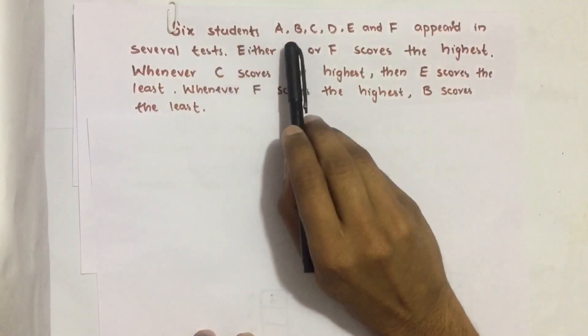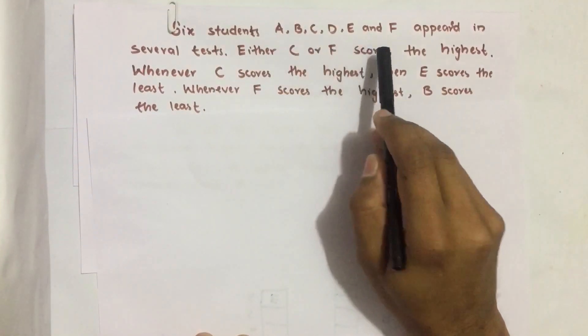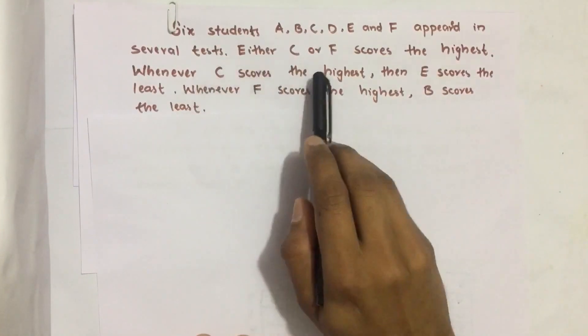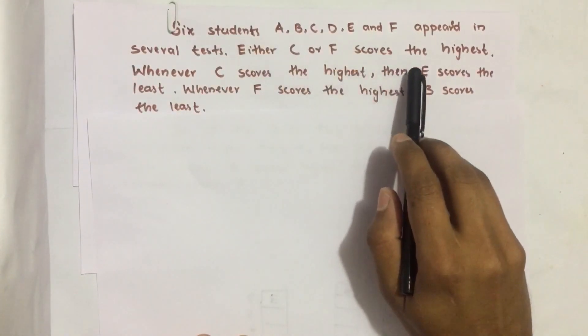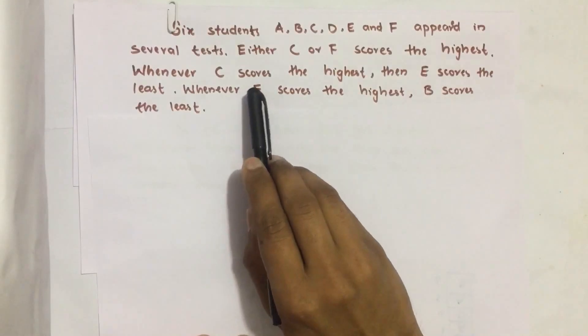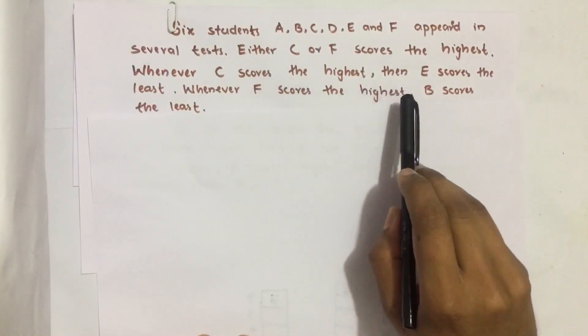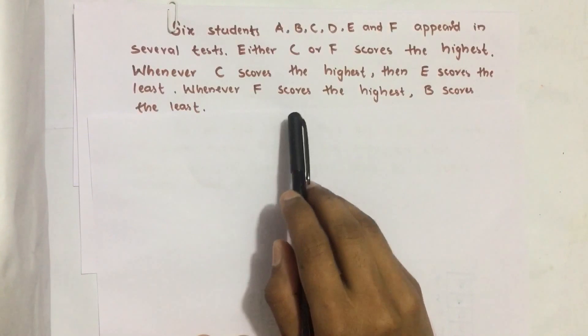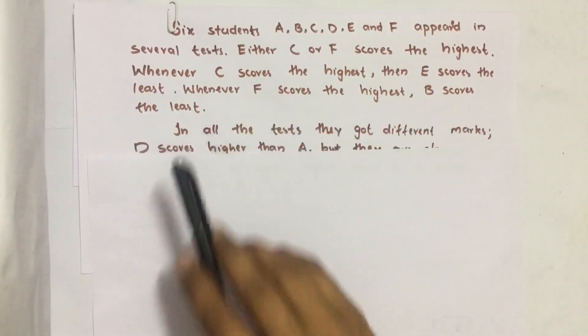Six students A, B, C, D, E and F appeared in several tests. Either C or F scores the highest. Whenever C scores the highest, then E scores the least. Whenever F scores the highest, B scores the least.